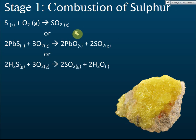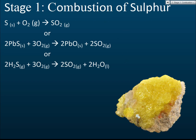There are four stages. Stage one is to produce sulfur dioxide. To get sulfur dioxide, we combust — we burn — sulfur. Sulfur exists as an element in nature, normally found around volcanoes. We can burn solid sulfur directly in oxygen to get sulfur dioxide.